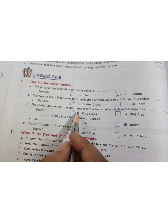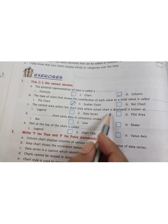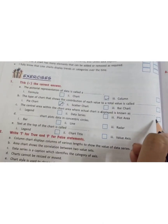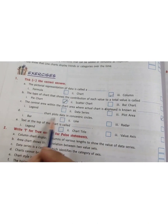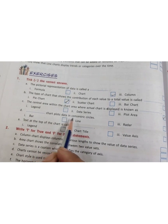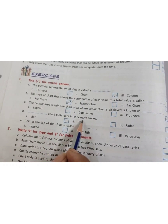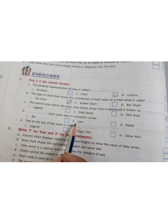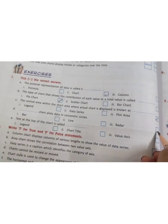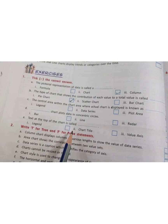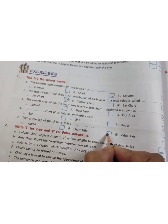The center area within the chart area where actual chart is displayed is known as plot area. Radar chart plots data in concentric circles. Text at the top of the chart is called chart title.